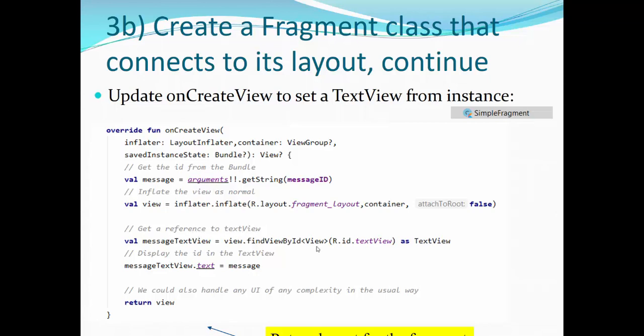Then we inflate the view. And then we get a reference for the text we would like to use and display the ID in the text view. In this case, this message will be saved in the text view by this reference. Through this, we could also handle any UI of any complexity in the usual way here, how we just usually normally work with fragment activities. And don't forget that onCreate view always returns layout for the fragment that we just inflated here.